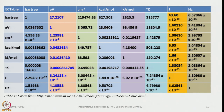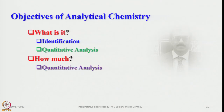In different instruments, energy is presented in different forms. For example, it can be Hartree, electron volts, wavenumbers (cm⁻¹), kilocalories per mole, kilojoules per mole, degrees Kelvin, Joules, or even Hertz. A table gives the conversion from one unit to another. The objectives of analytical chemistry are first to know what sample we have — that is, identification and qualitative analysis — and then to know how much is present, which requires quantitative analysis.